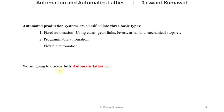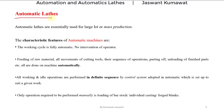Now we are going to discuss fully automatic lathes. Automatic machine tools are used for mass production, meaning automatic lathes are essentially used for large-lot or mass production. The characteristic features of automatic machines are: first, the working cycle is fully automatic, meaning there is no intervention of the operator during the working of the machine.